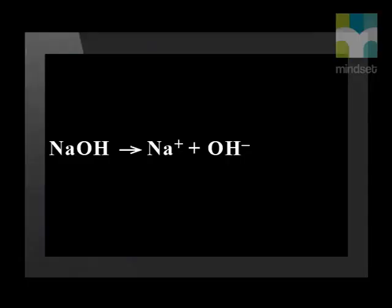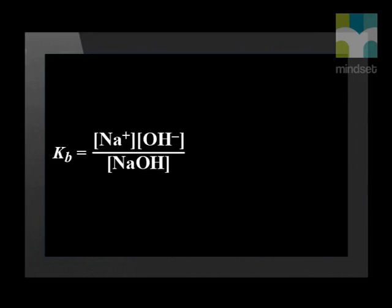Let's talk about the dissociation constant of a base. Sodium hydroxide is an example of a strong base. It dissociates completely in water. The dissociation equation is given as: sodium hydroxide dissociates in water into sodium ion and hydroxyl ion. The dissociation constant of a base is given as Kb equal to the concentration of the sodium ion multiplied by the concentration of the hydroxyl ion divided by the concentration of sodium hydroxide.